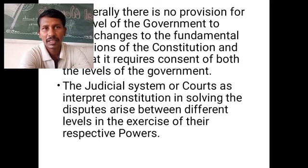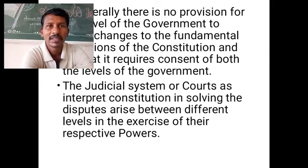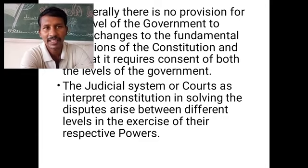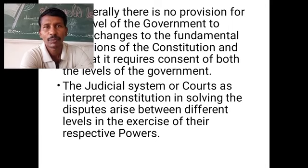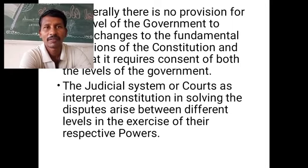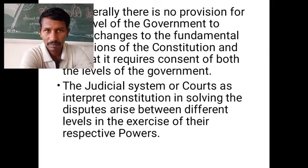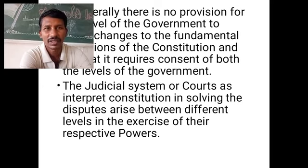Whenever disputes arise relating to the exercise of respective powers of the central government and state governments, the courts or judicial system acts as an umpire — the one who protects from injustice. So to summarize: for features four and five, unilaterally neither the central government nor the state government alone has the power to amend fundamental constitutional provisions; both levels must consent. And courts act as the resolver of disputes between central and state governments.